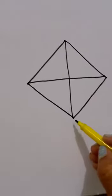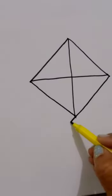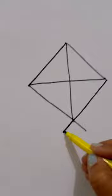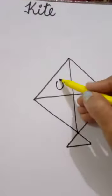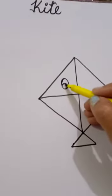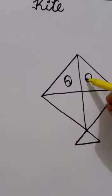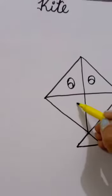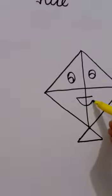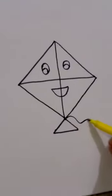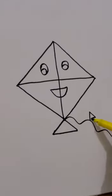Now make a small triangle. Yaha pe hum ek small triangle banayenge. Make its eyes. Yes. And lips of the kite. So, our kite is ready.